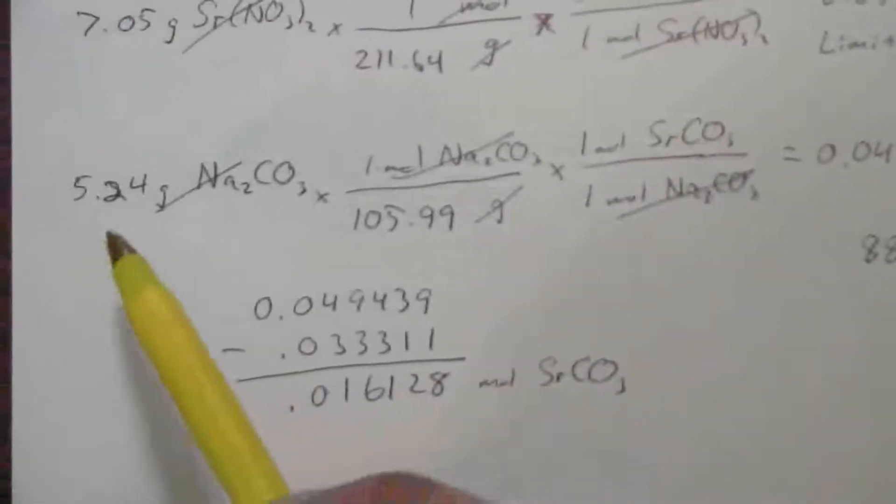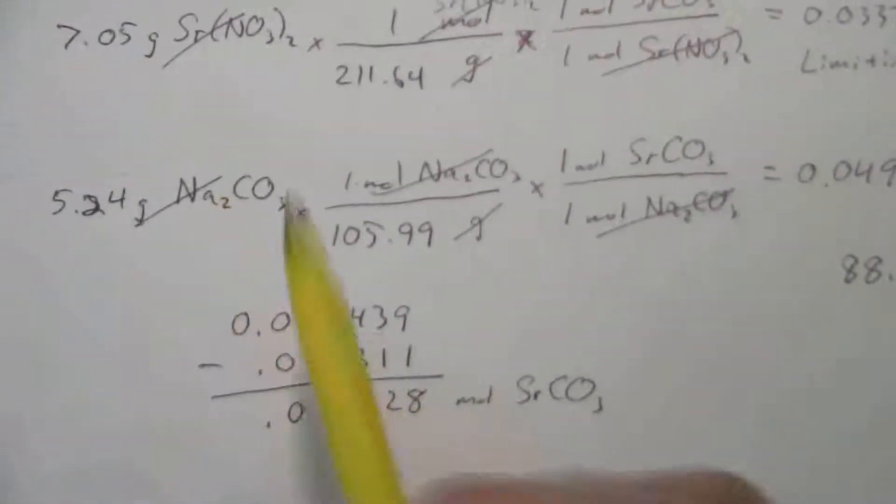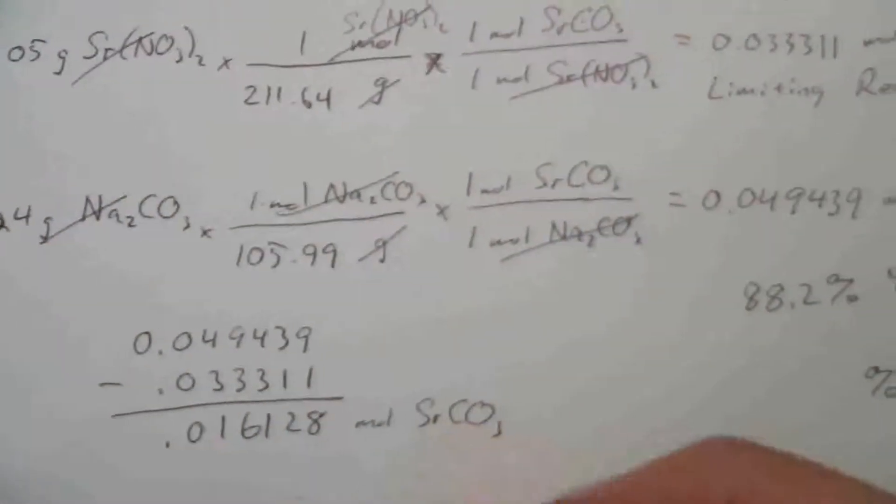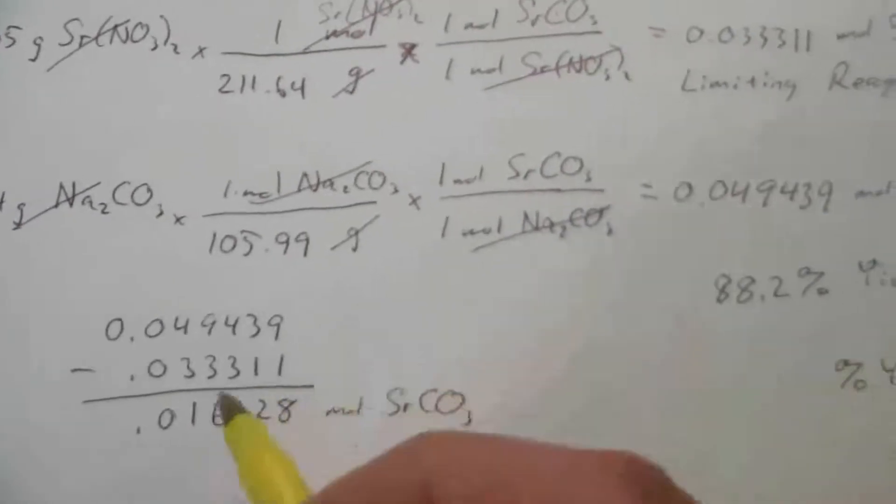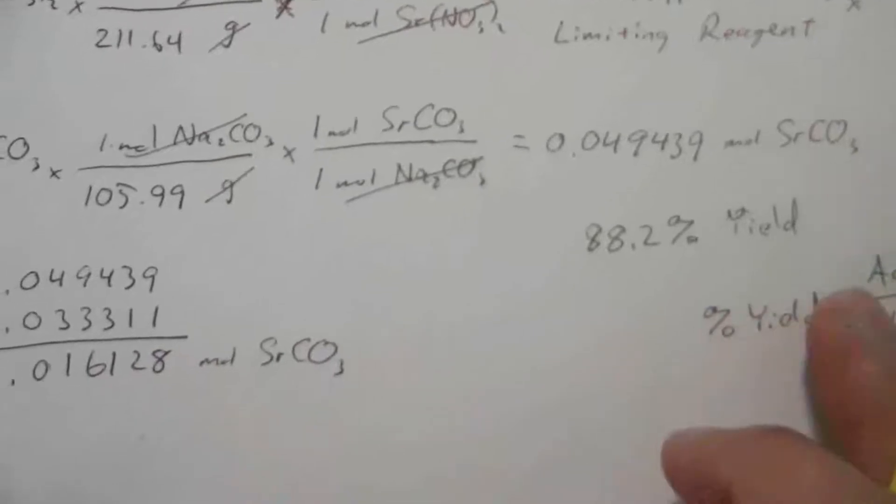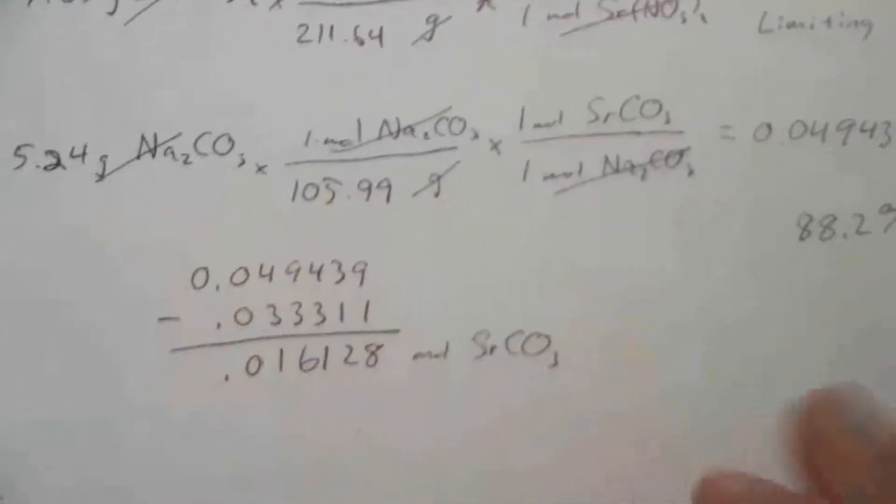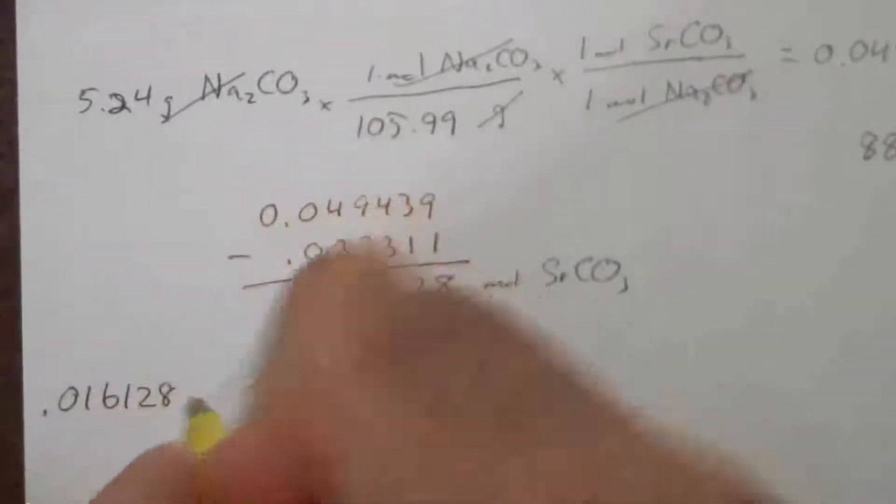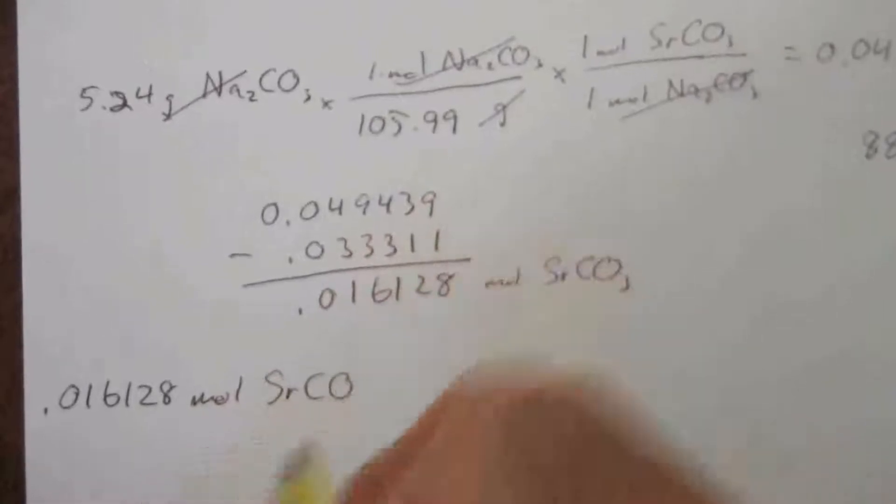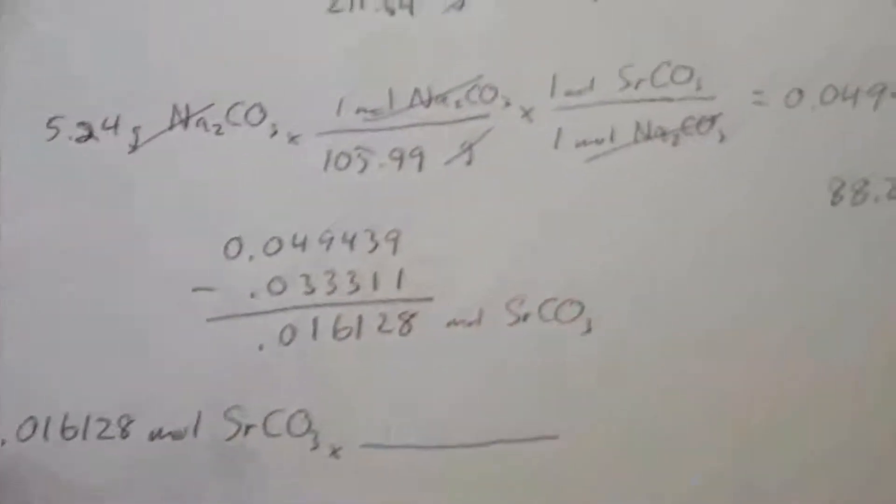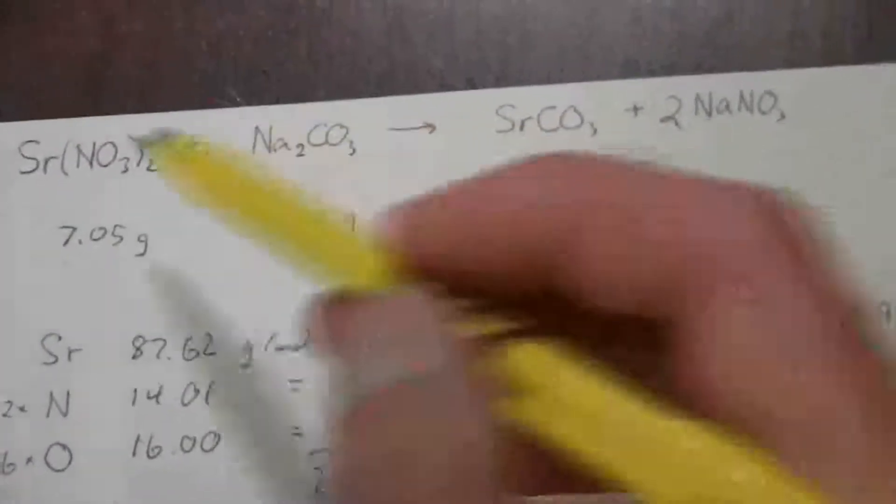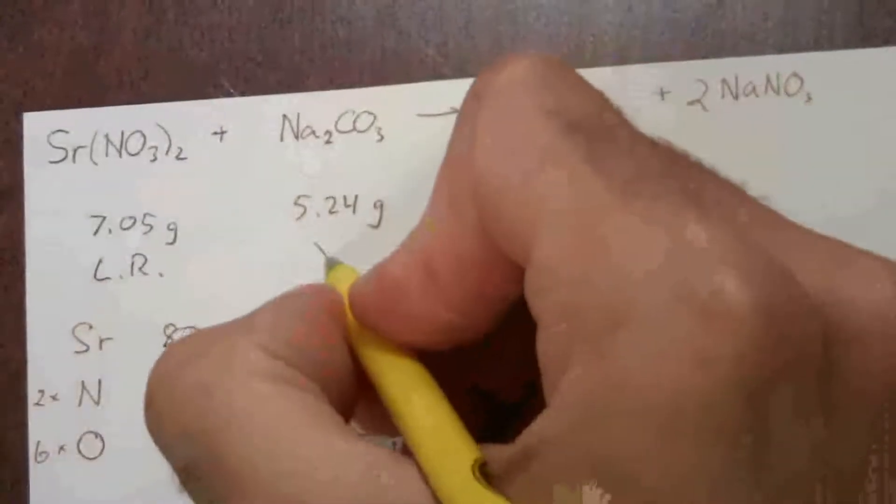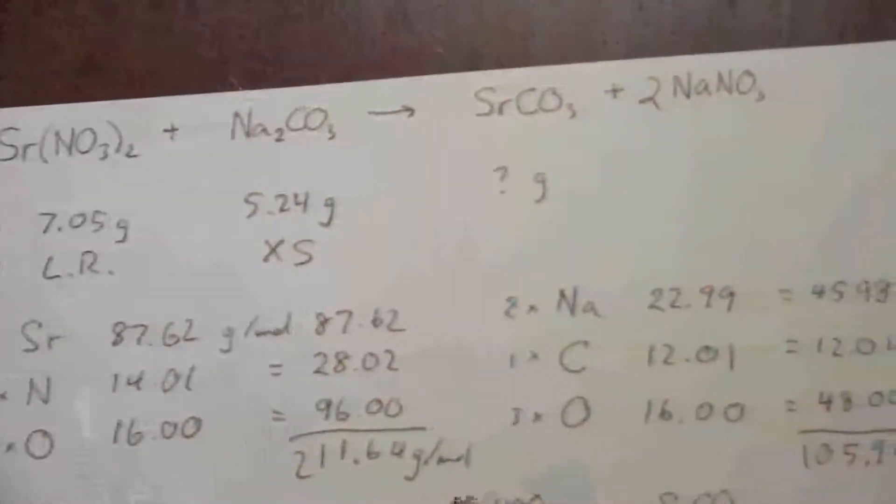So, this is the amount extra that I would have been able to produce of the strontium carbonate from my sodium carbonate. If I were able to use all of that up, this is the difference extra that I would have been able to produce. And so, what I can do is take this amount and convert that back into grams. And let me start over here so that I have enough room. 0.016128 moles of strontium carbonate. And we have our same mole ratio, because I'm going this time back to the reagent in excess. This is my limiting reagent, and this is my reagent in excess.